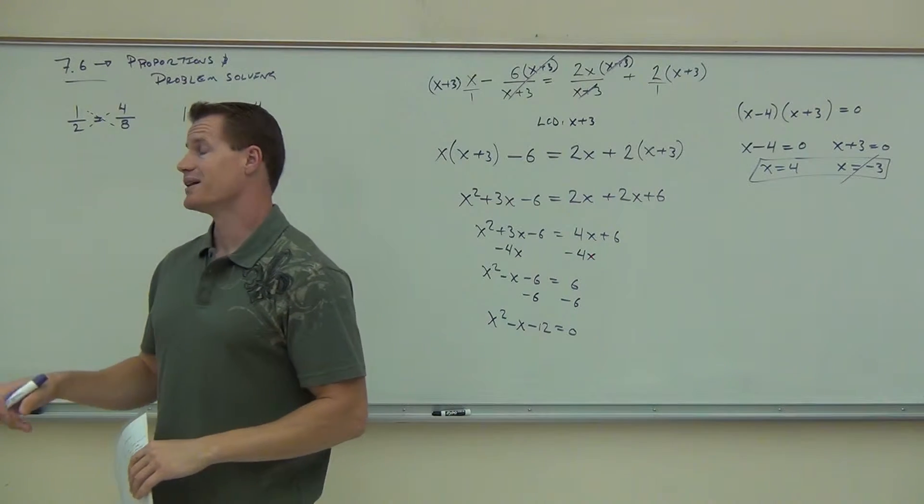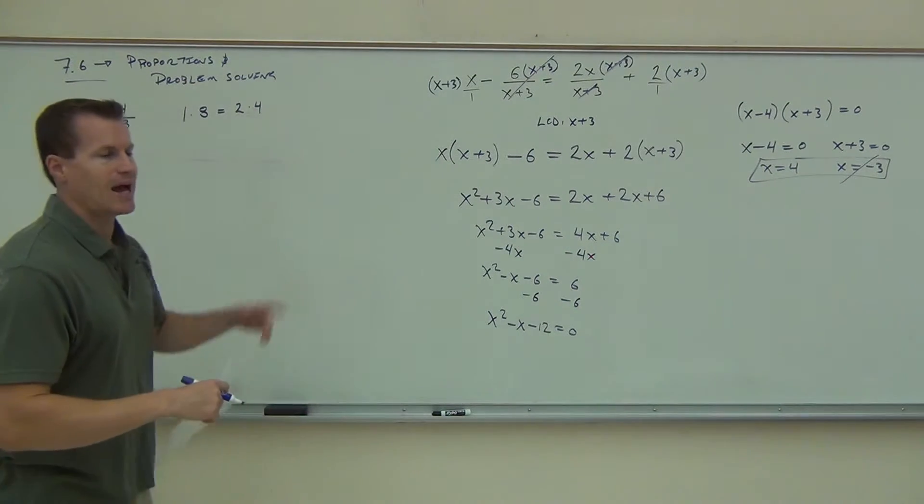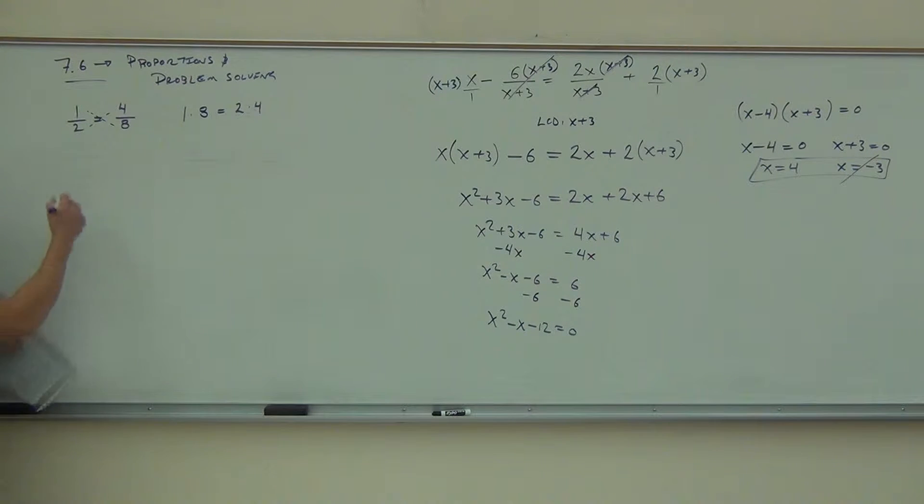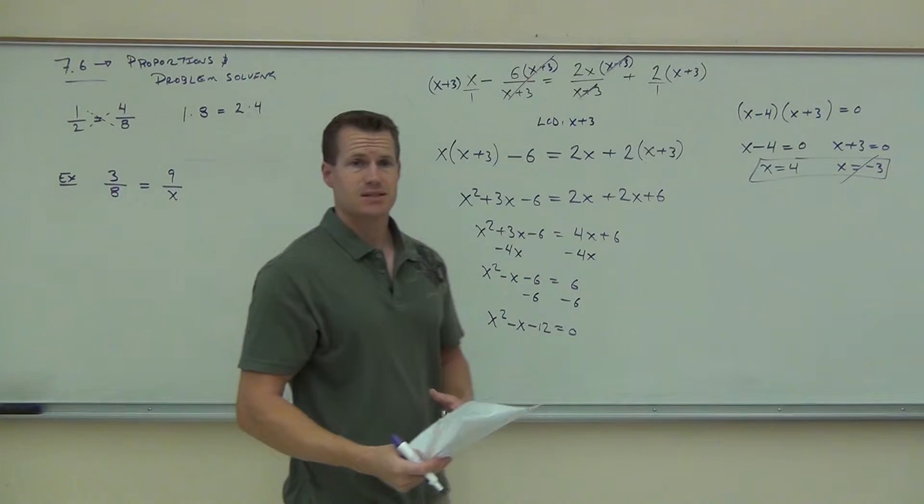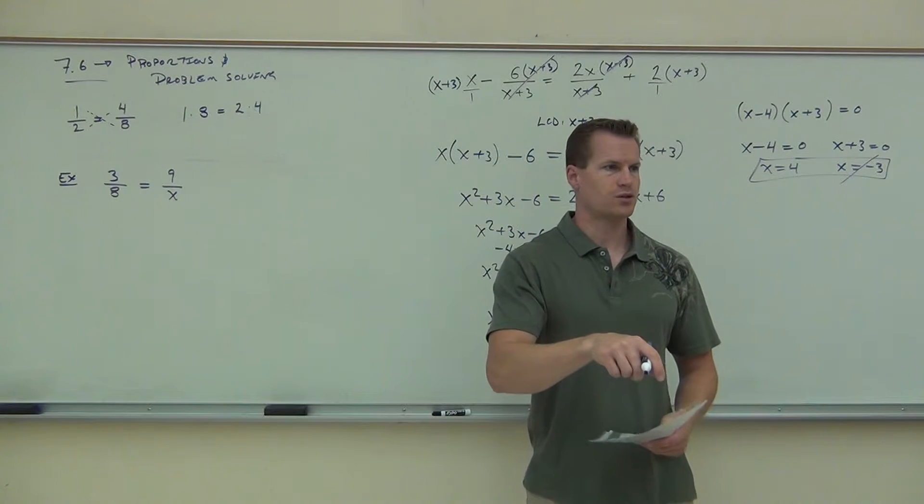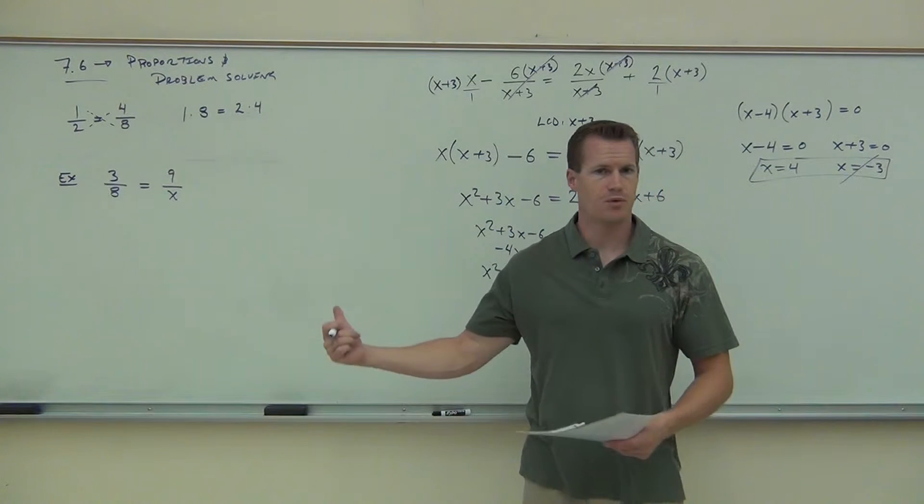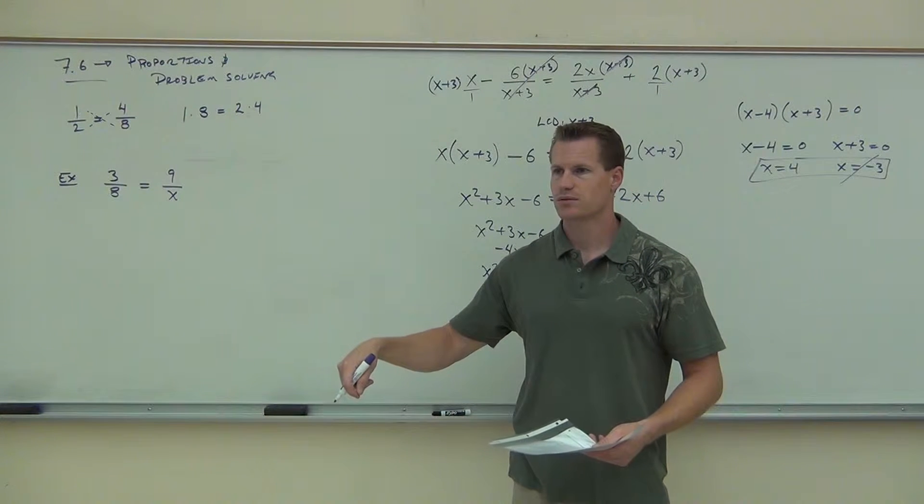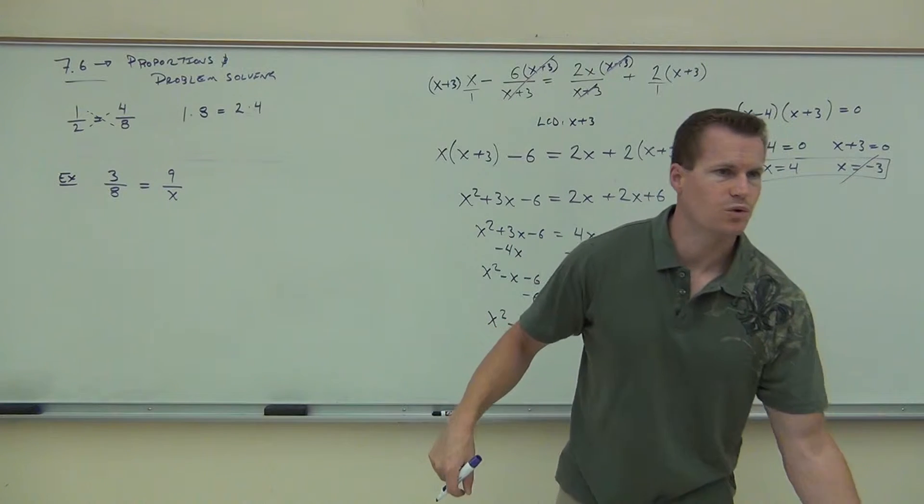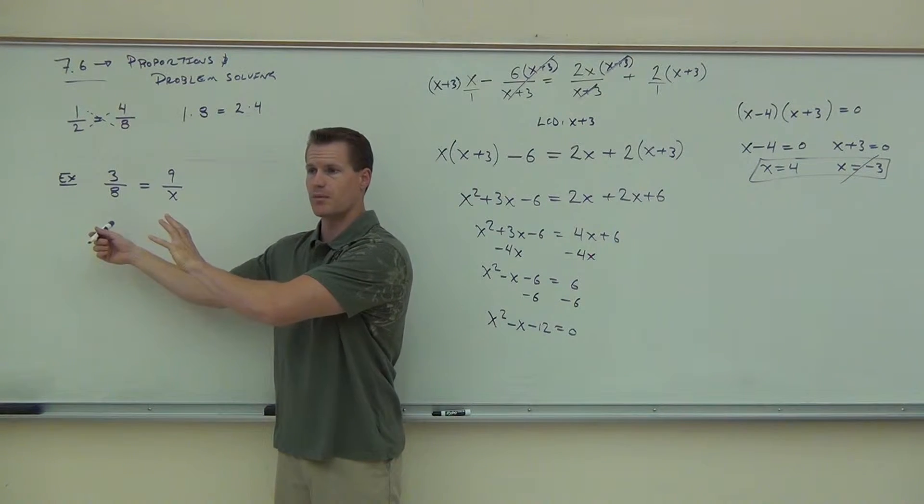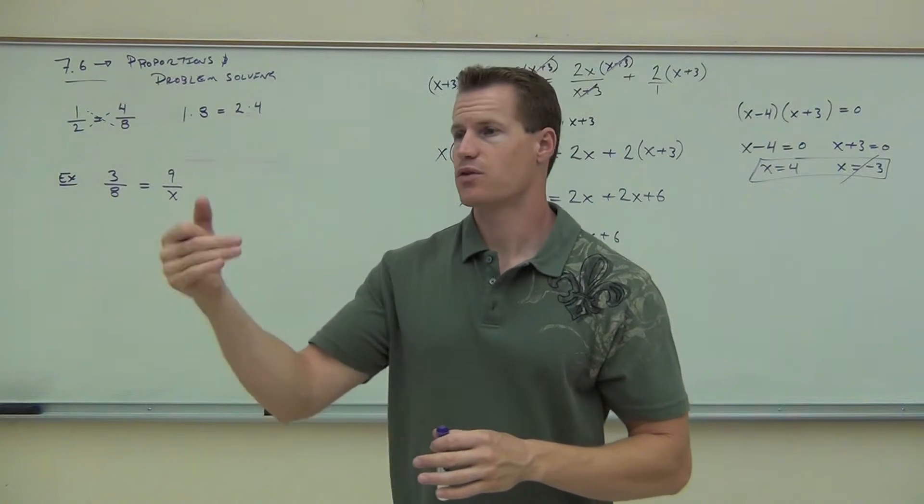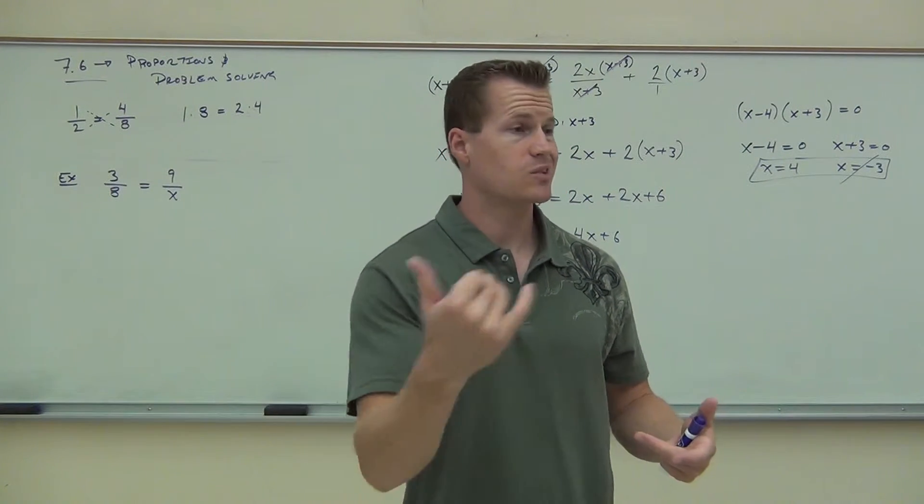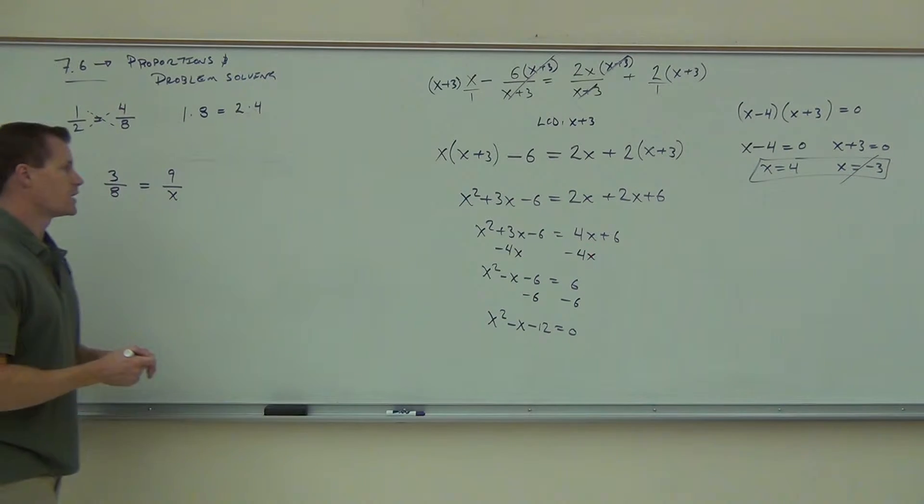This allows us to solve proportions really, really easily. For instance, let's say I didn't have 1 half equals 4 eighths. I had something like 3 eighths equals 9 over x. Hey, is that still a proportion? Is it a fraction equal to a fraction? That's what a proportion means. So, is that still a proportion? Sure. Is cross-multiplication still going to work? Absolutely. If cross-multiplication works in every proportion, it also has to work in this proportion as well. So, what that means is that if you ever get a proportion, it's not really a long process to solve this thing. All you have to do is find the cross-product.